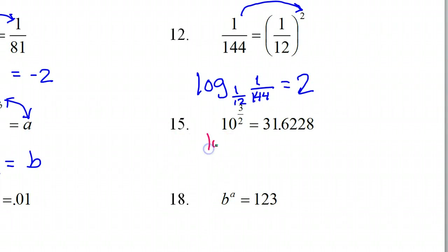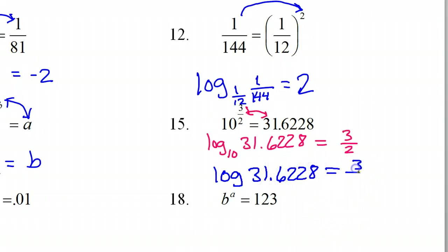Here again if we continue the previous pattern, we would have log base 10. And then we'd switch these. So it would be log base 10 of 31.6228 is equal to 3 halves. But we are not to put log base 10. The 10 is to be understood. So we will just write log 31.6228 equals 3 over 2. This is the common log. Base 10 is understood.